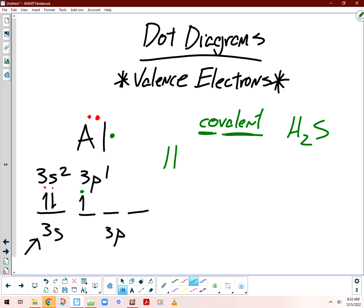So my hydrogen is going to have one electron, and I'm going to have two of them. My sulfur is going to have six, because sulfur is, let's see, 3s2, 3p4.